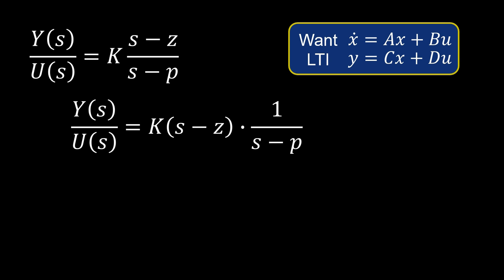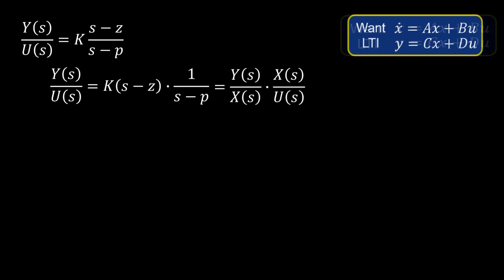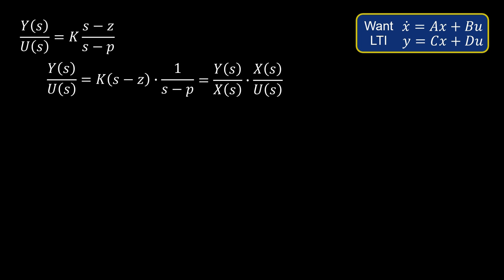Now, consider the compensator is the product of two transfer functions, linked by the state variable X. Transforming X over U to state space, we get the ODE in terms of X, and the input U.